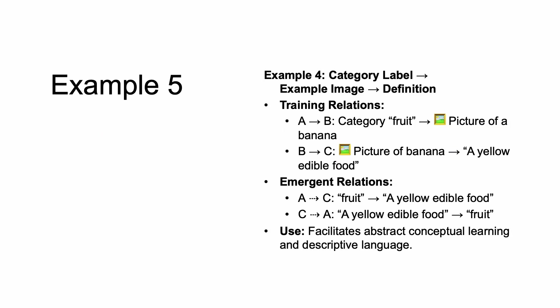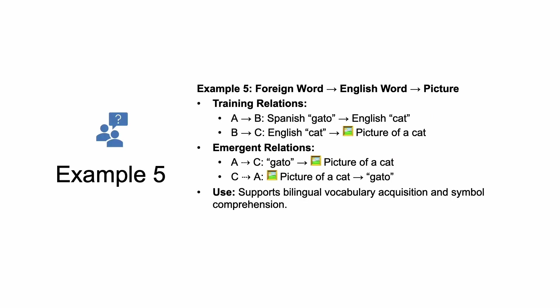Direct relations like a picture of an apple, a real apple, and the word 'apple' are directly related. You can do this with categories — this is how we teach categories, which are so important for later learning. You say 'fruit' and they point to a picture of a banana; shown a picture of a banana they say 'yellow edible food'; when you say 'yellow edible food' they say 'fruit.' You can add more fruit — say 'fruit' and they point to an apple — and continue building the category. This also applies to bilingual learning: say 'gato,' they say the English word; say the English word and they point to the real picture; the emergent relation is that when you say the Spanish word they point to the picture, and when shown the picture they say the Spanish word.